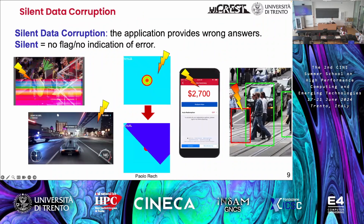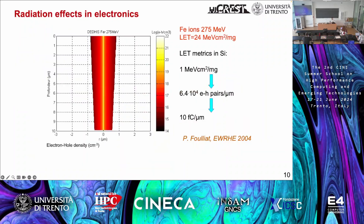These errors can lead to silent data corruption, which means your application finishes, everything seems fine, there's no error flag, but the output can be completely wrong. You can have a totally corrupted image, or a single pixel error in a game that you don't care about, or a completely wrong physical simulation, or a wrong bank transfer, or a wrong classification in self-driving cars.